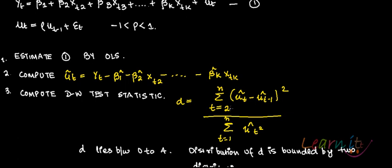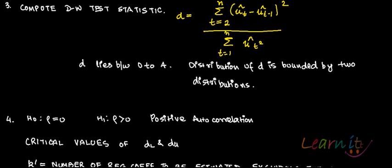The numerator starts from t = 2 because we are considering t-1, so one observation is lost — it goes from 2 to n, while the denominator goes from 1 to n. D lies between 0 and 4. The distribution of d depends on the independent variables and is bounded by two distributions, which construct the two critical regions of the Durbin-Watson test.